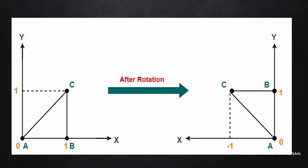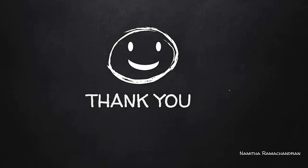So the three new points after rotation are (0,0), (0,1), and (-1,1). We will mark these three points and join them using straight lines to redraw the rotated triangle. Before rotation, we will mark the original triangle as well. This completes the rotation case. Thank you.